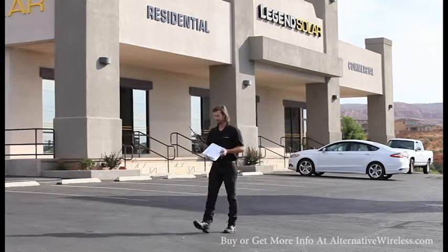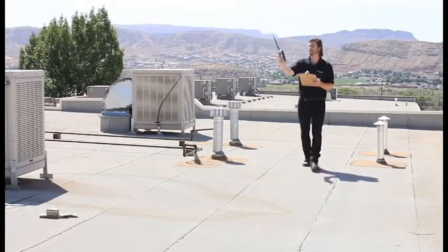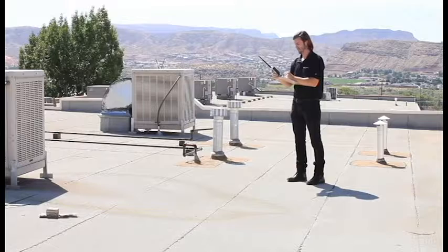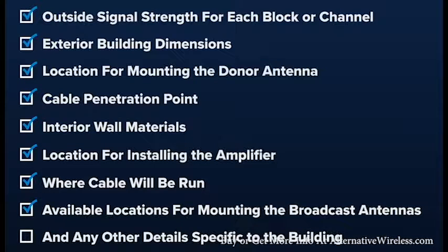In addition to the floor plan, you'll need to get the details obtained from a site survey. For additional information on conducting a site survey, check out this video. From your site survey, make sure that you get all these important details: outside signal strength for each block or channel, exterior building dimensions, location for mounting the donor antenna, cable penetration point, interior wall materials, location for installing the amplifier, where cable will be run, available locations for mounting the broadcast antenna, and any other specific details to the building.